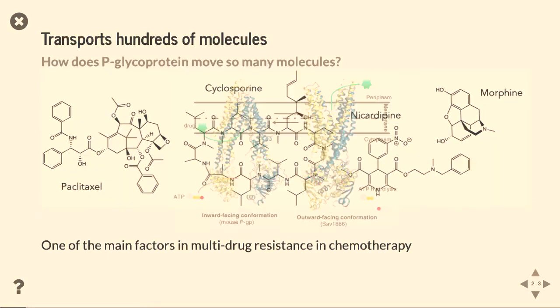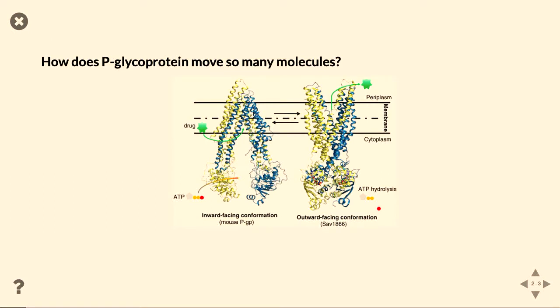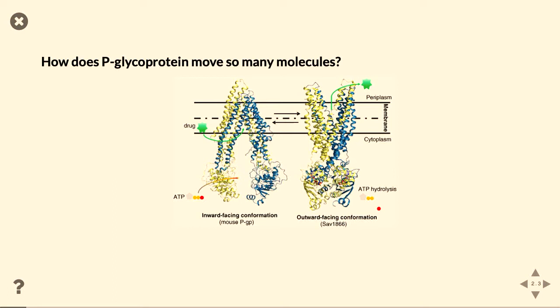So the question now becomes, how does P-glycoprotein move so many molecules? This is actually really unusual. Proteins we normally think will interact with one or two things, but PGP is really unique for moving so many different molecules. Well, we don't know, is the short answer.